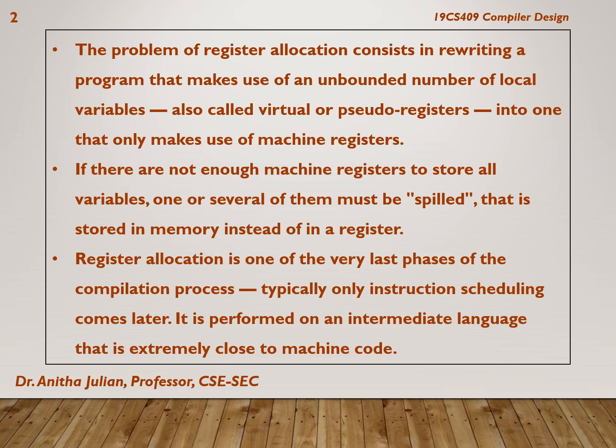We've already discussed that the problem of register allocation consists of rewriting a program that makes use of an unbounded number of local variables. Any program is going to have variables, and they are called virtual or pseudo registers, which will be used to store these variables. We need to use the machine registers for doing our arithmetic computations.